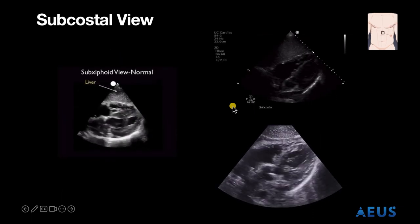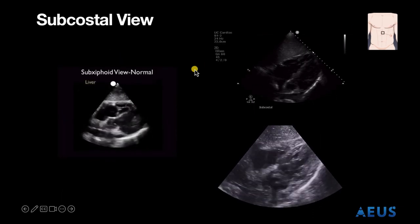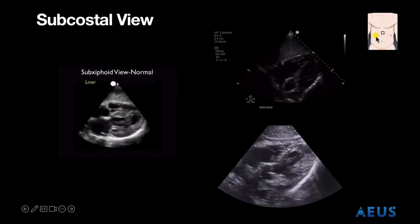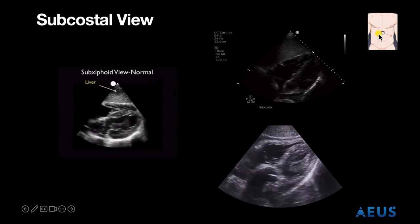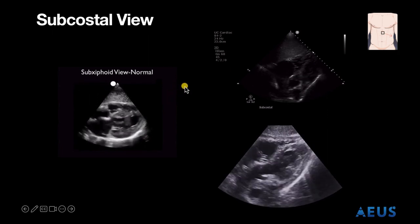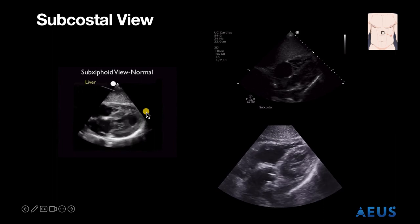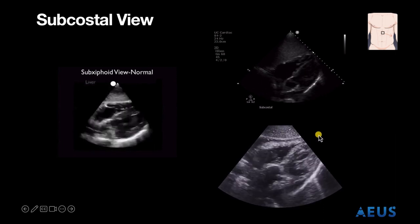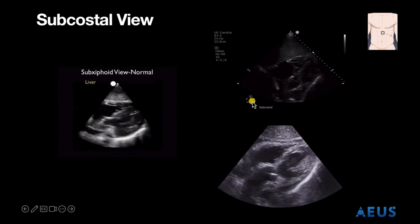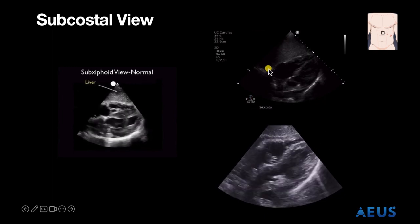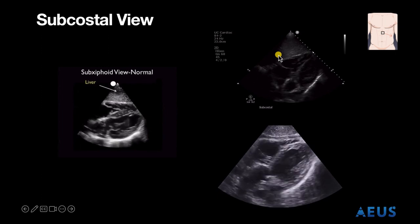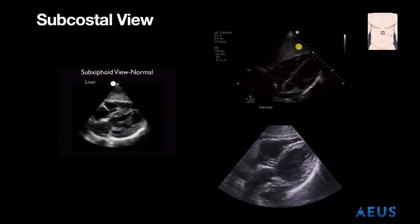We also have our subcostal view, obtained by using the liver as a window. Our probe marker will be pointing towards the patient's left hip. This view is most effective to look for effusion. A large pericardial or circumferential effusion can be seen in this view and allows us to assess for tamponade to see if there's right ventricular diastolic collapse.